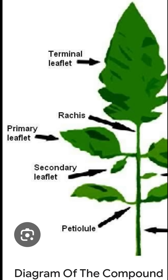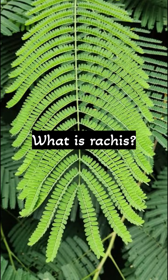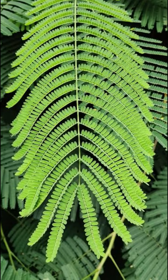Unlike a simple leaf, a pinnately compound leaf has multiple leaflets but functions as a single unit. A pinnately compound leaf is a type of compound leaf in which the leaf blade is divided into multiple leaflets arranged on either side of a common central axis known as the rachis, and it resembles a feather in its arrangement. Thanks for watching — do like, share, and subscribe.